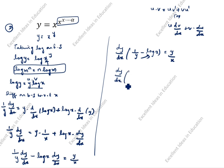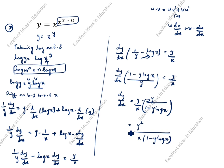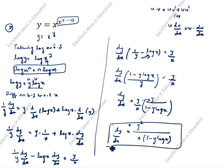Simplifying: dy/dx·(1 − y·log x)/y = y/x, so dy/dx = y squared divided by x·(1 − y·log x). You can see the formula answer and the differentiation method give the same result. We will see the next question.